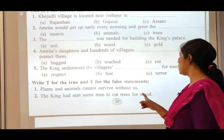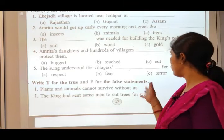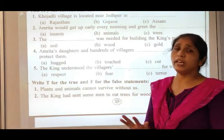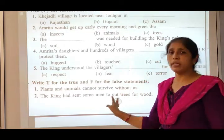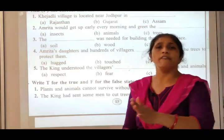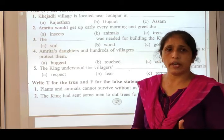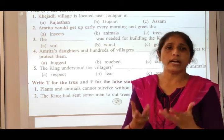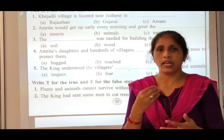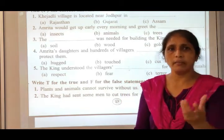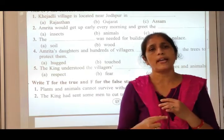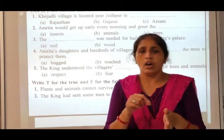Statement one: Plants and animals cannot survive without us. Think about it — our survival means we cannot live without plants and animals. We get milk from animals. We get vegetables and grains from plants. Everything we eat comes from plants or animals. So we are totally dependent on plants and animals — we cannot survive without them.